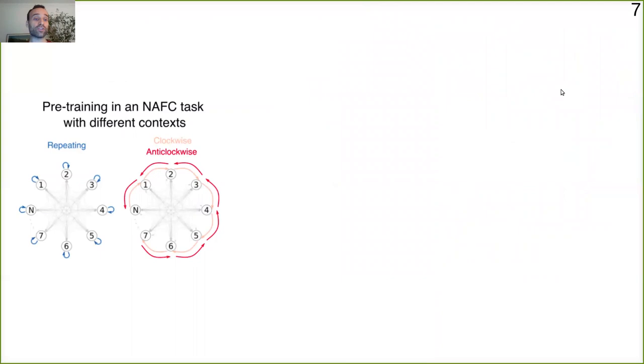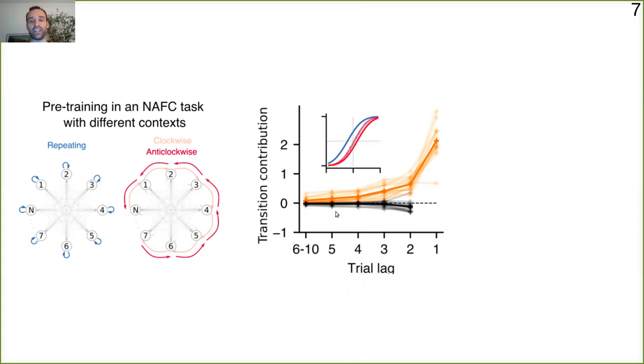So what we did was to pre-train our networks on more naturalistic environments. This more naturalistic means for us many more choices, as I'm showing here, in different contexts with different transition probabilities, and we were able to recover this reset strategy here.